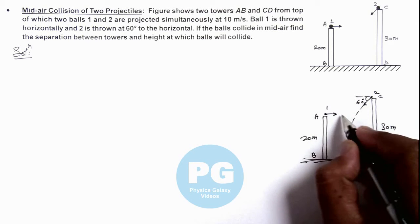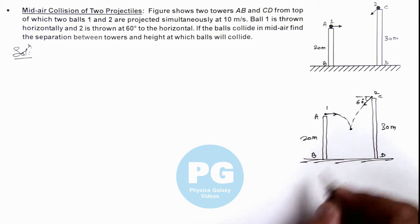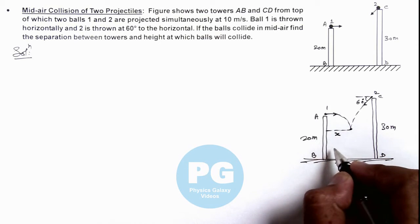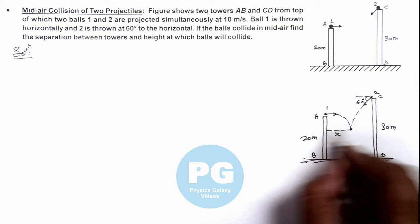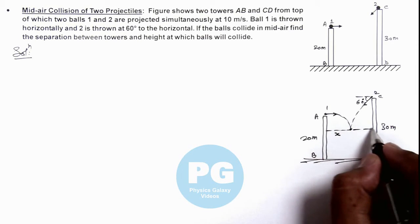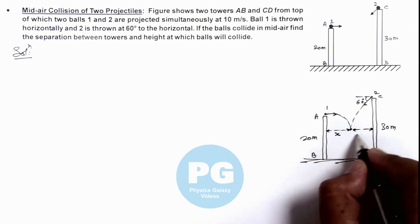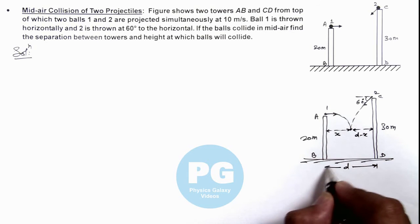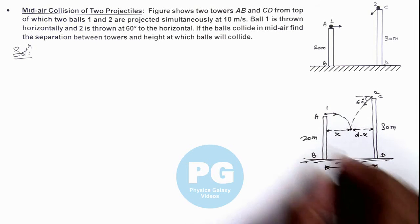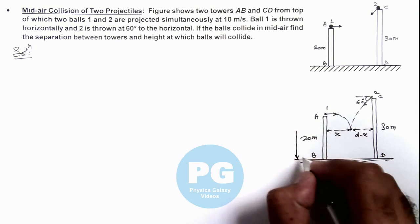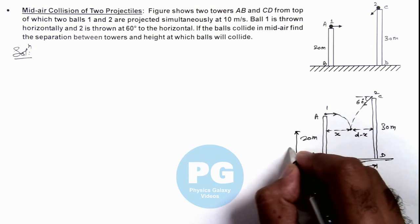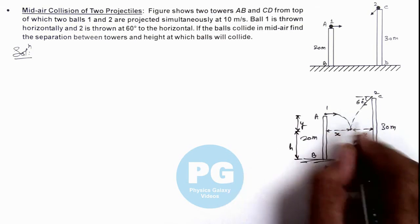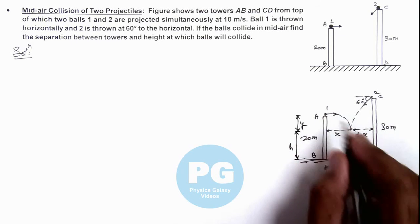In their projectile path they are colliding at this point. We can see if x is the distance of this point of collision from tower AB, the distance of this point from tower CD will be d minus x, if we consider d as the separation between the two towers. The collision takes place at a height h above the ground, and this height is y below the projection point of ball 1.